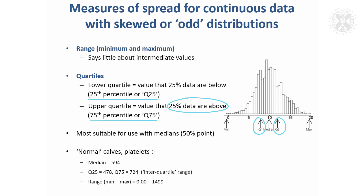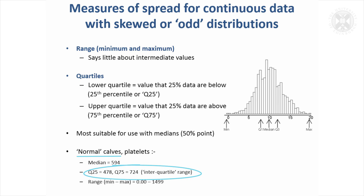Sometimes they're alternatively called the 25th percentile and the 75th percentile. The quartiles are a way of summarising the data, and if you remember that box and whisker plot, that had the quartiles on it and summarised the minimum, maximum, median, and the quartiles. Between the quartiles, 50% of the data — the middle values — will lie. So it gives you a feel for the spread of the distribution, though it doesn't measure the accuracy of the median itself. It tells you how much the data are spread about the median, and it is most suitable for use with medians, because you've got the 25th percentile, the 75th percentile, and the median conveniently falls in the middle as the 50th percentile.